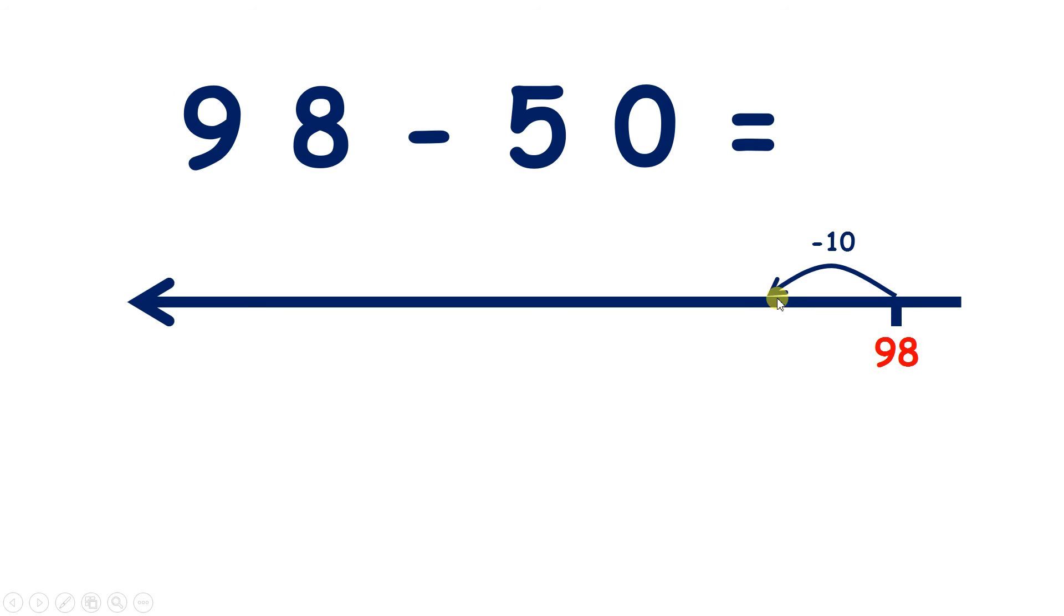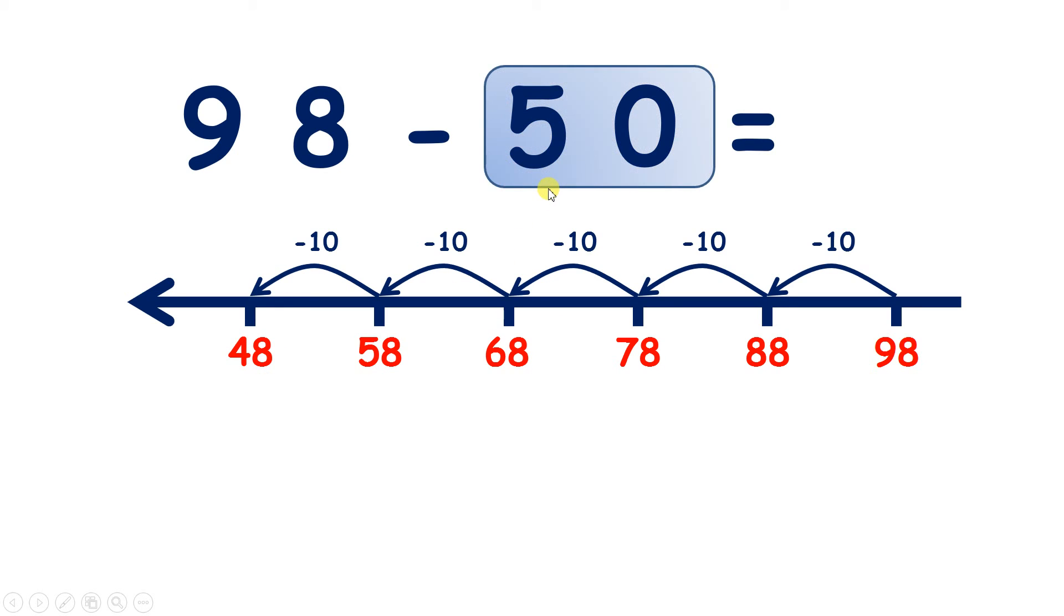Subtract 10 and we have 88. Another 10, 78. 68. 58. And one more 10 leaves us with 48. So we've subtracted 50 because we've subtracted 5 tens. So 98 take away 50 is 48. So the units digit stays 8 because we haven't taken away any units. But we started with 9 tens, we took away 5 tens, so we're left with 4 tens.